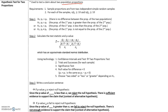Here we have our test statistic, which we will use technology to find. Here are the steps to finding it using technology, which I will walk you through. Finally, we read a conclusion sentence. If the P-value is less than or equal to alpha, we reject the null hypothesis. And if the P-value is greater than alpha, then we fail to reject the null hypothesis.